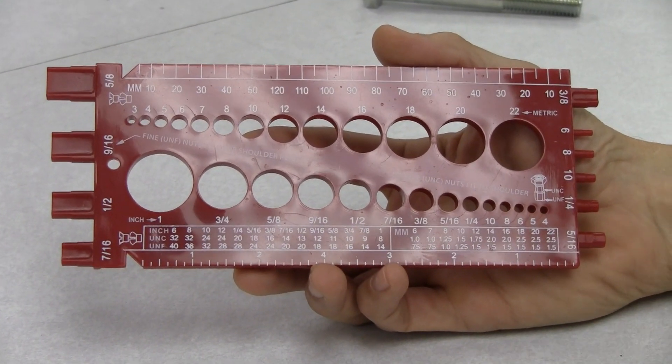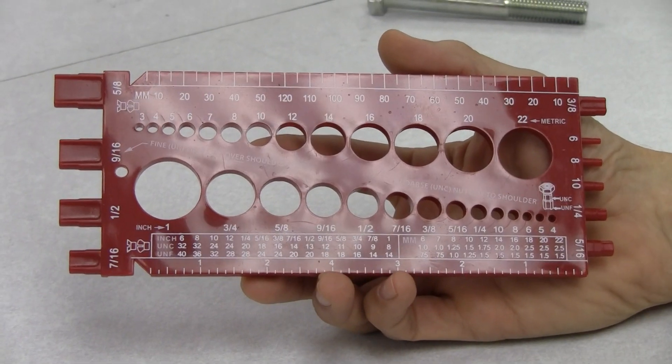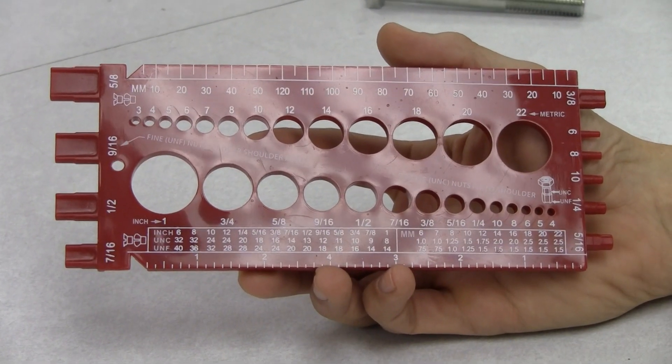With this gauge you can check the diameter, you can check the thread pitch, and you can also check the length of the bolt. Those are the three important measurements that we do need.